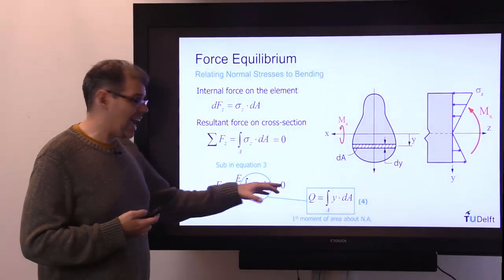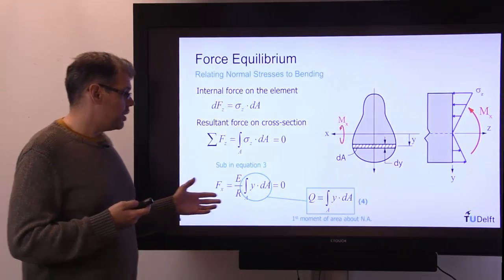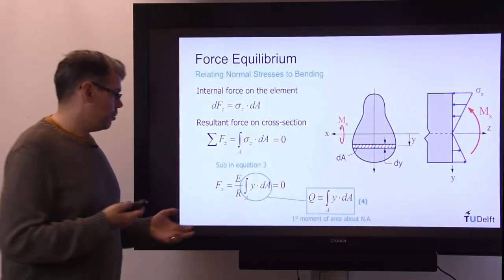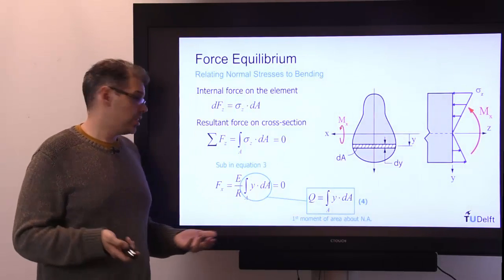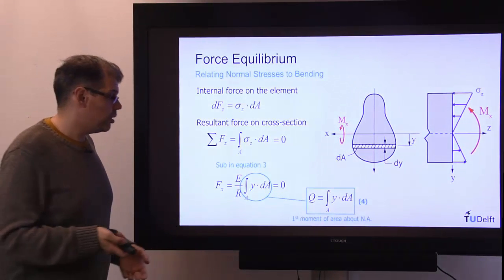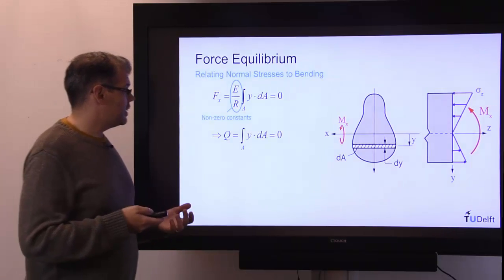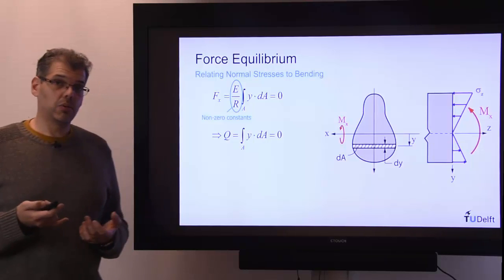Now if we look at this equation, it has to be equal to zero. So that actually means that our first moment of area has to be equal to zero, because if our stiffness is zero, there's no beam, it has no resistance. If the radius of curvature is zero, there is no bending. So those are trivial results. So the only result that makes sense is that our integral of y da has to be equal to zero.